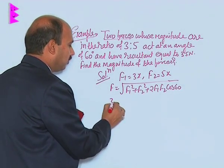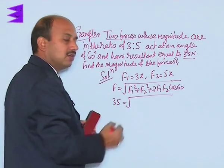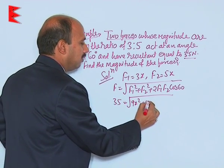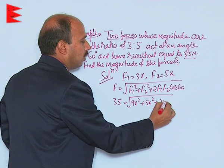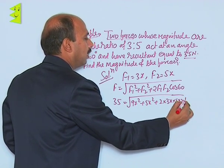We can put all the values. This is 35 equal to - because 35 is the given resultant force - it is your 3x, that is 9x squared, plus 5x squared, plus twice 3x into 5x into 1 by 2.